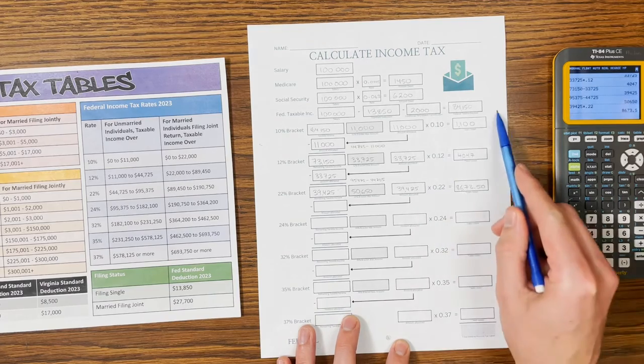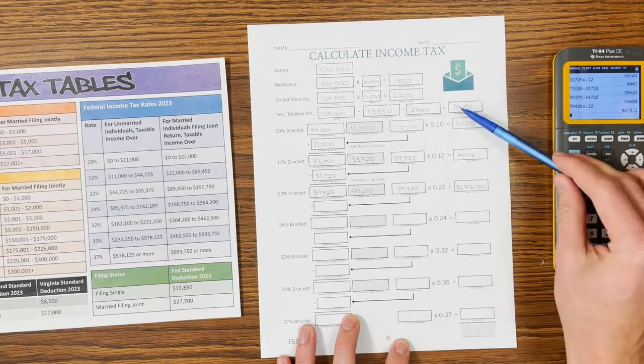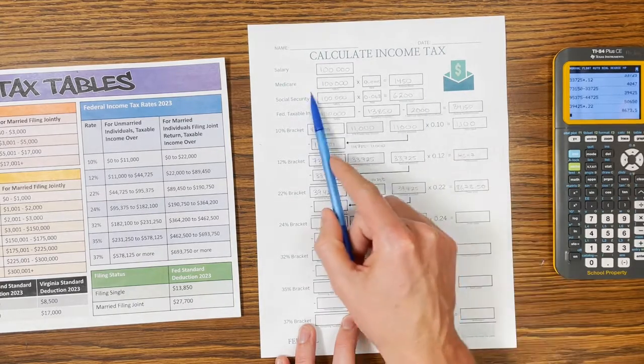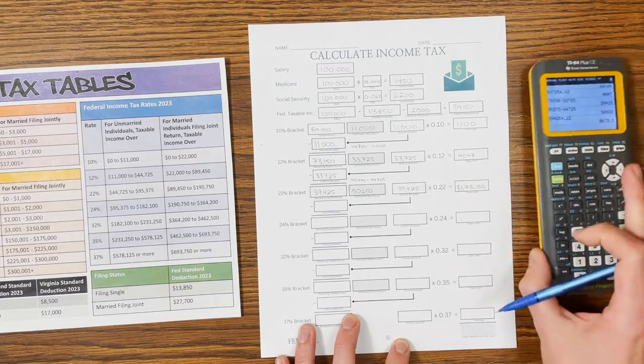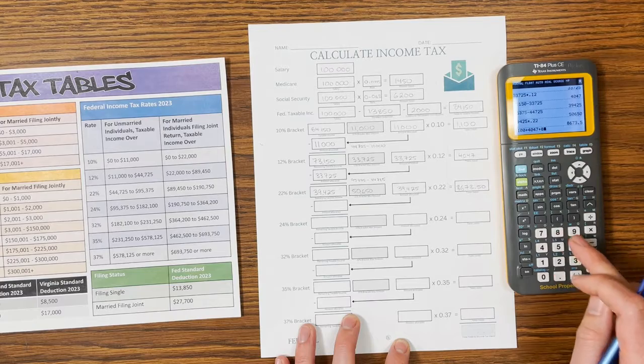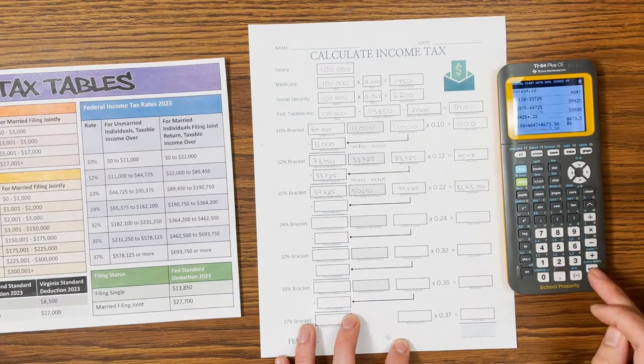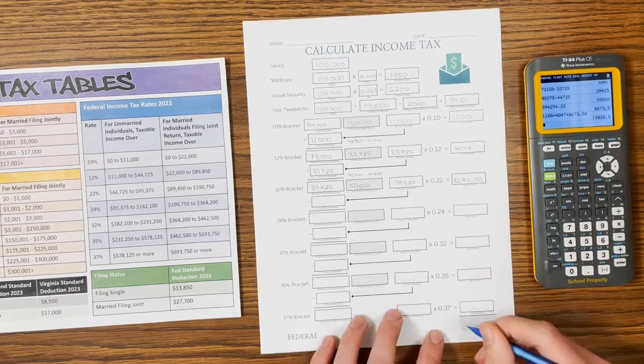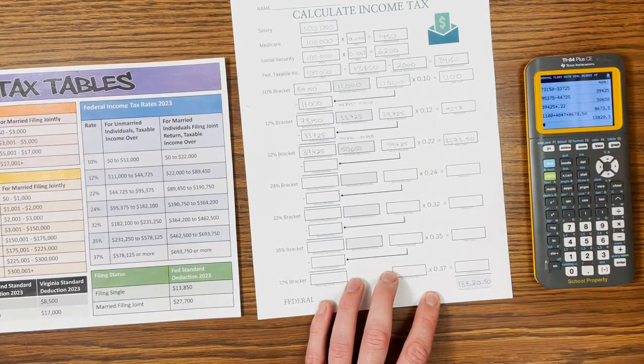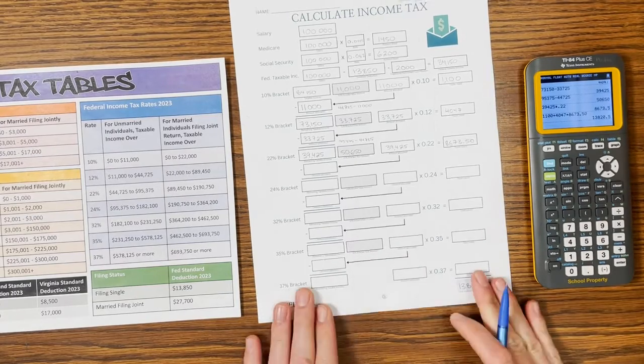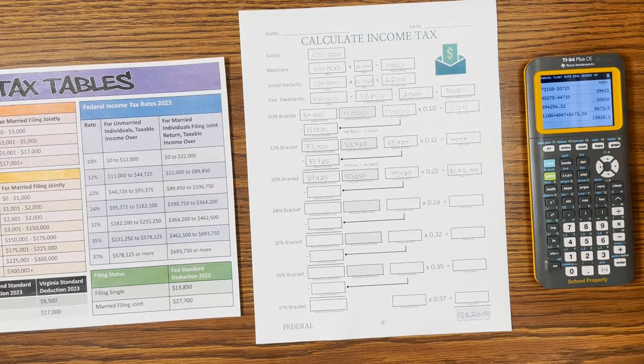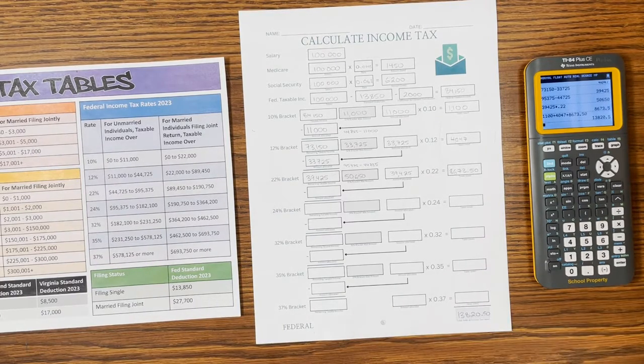We're going to add up our three federal income tax owed boxes to get our total federal income tax owed. Remember the FICA ones are their own taxes. You may be asked for those, you may not be. So I've got $1,100 plus $4,047 plus $8,673.50, which is $13,820.50. So that is our federal income tax return. Make sure you check out my channel. Hit subscribe for more information about taxes and everything related to personal finance. Thanks for stopping by.